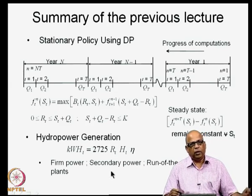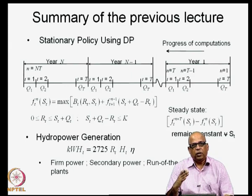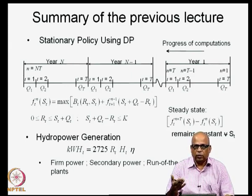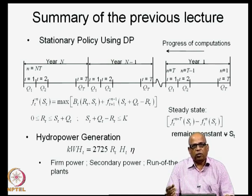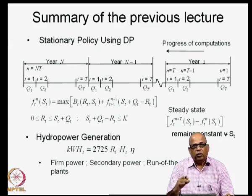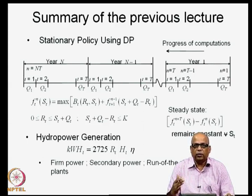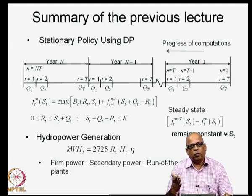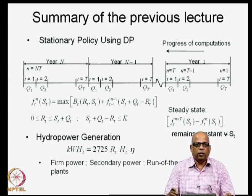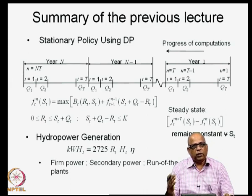We also introduced the concept of secondary power. Firm power is the power available with 100% reliability — the minimum power available for a particular power project, whether run-of-river or reservoir. Secondary power is defined as the power available with 50% reliability, so it is higher than firm power but available less frequently. When supplying power to industries, secondary power is charged differently from firm power, which is assured 100% of the time.